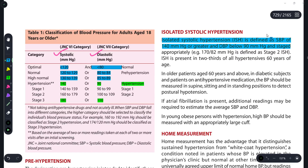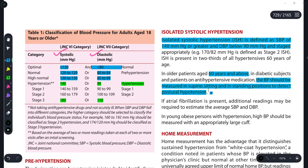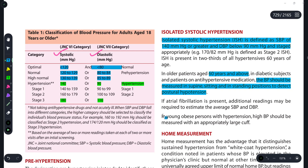An important point: in old patients who are 60 years and above, or in diabetic subjects on anti-hypertensive medications, BP should be measured in supine position and also in standing position to detect postural hypotension. In young or obese persons, a large cuff should be used to measure BP.